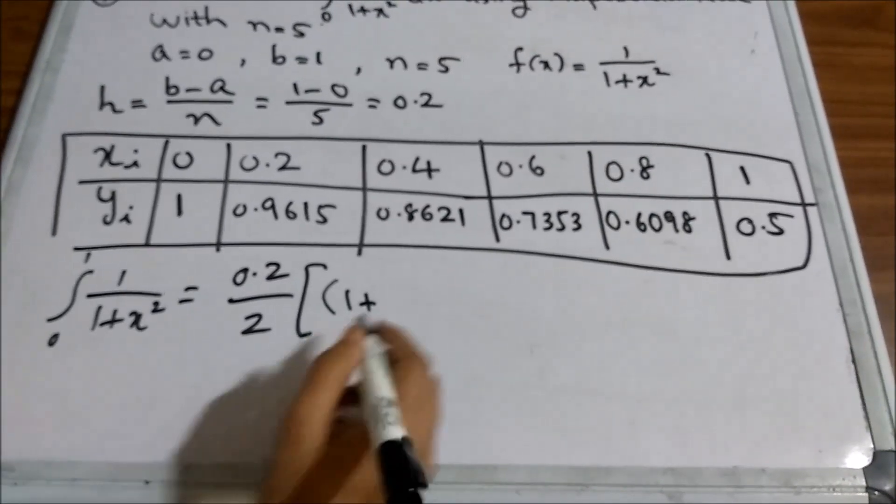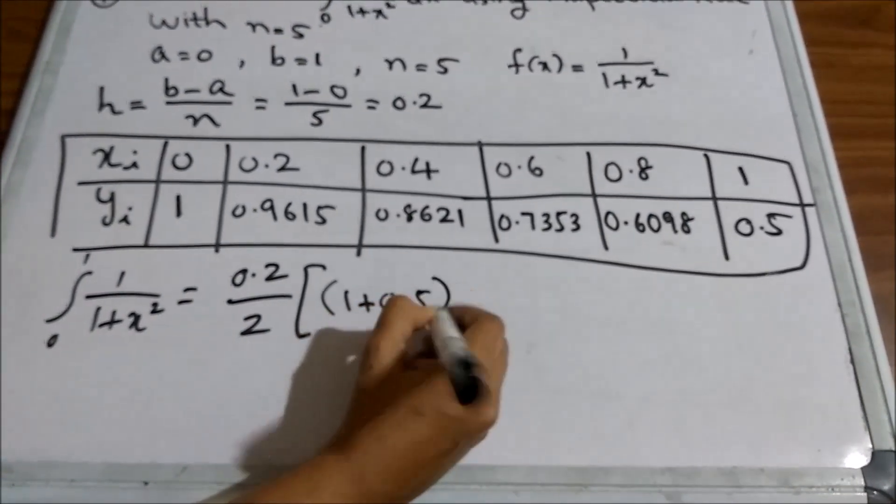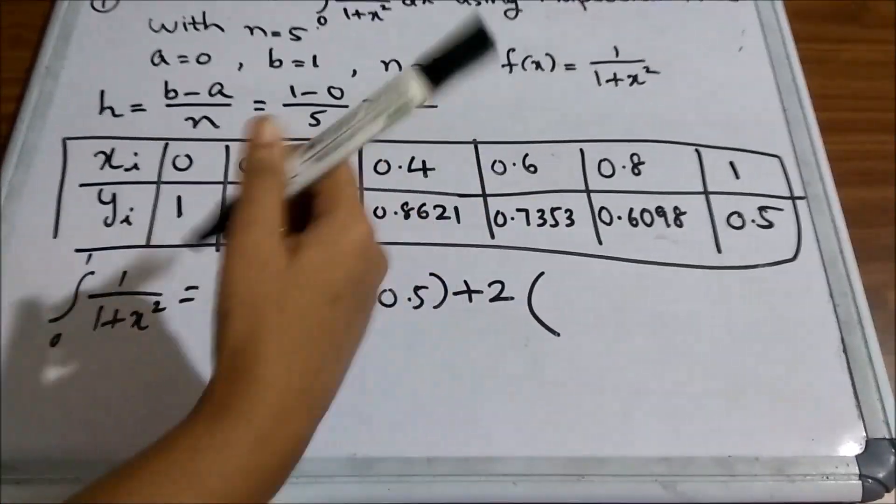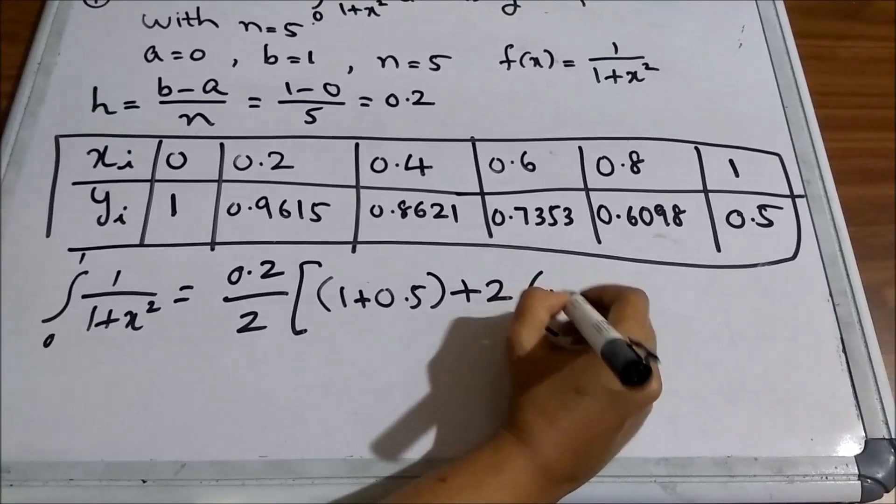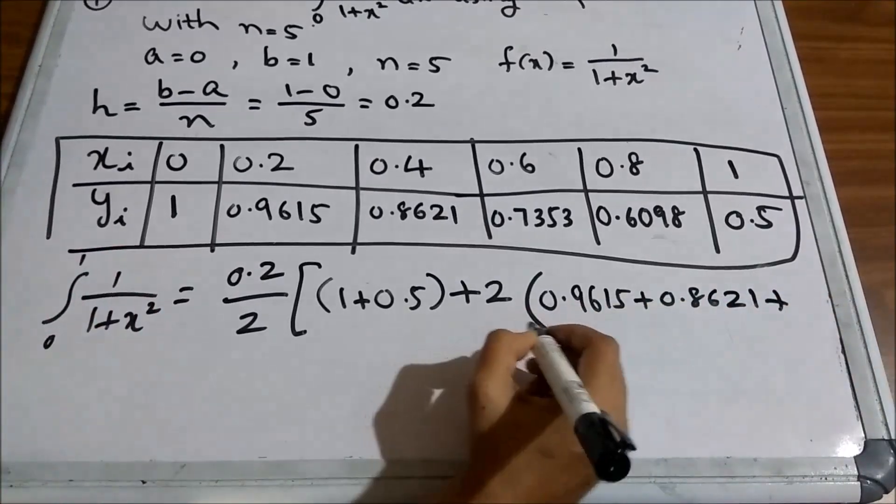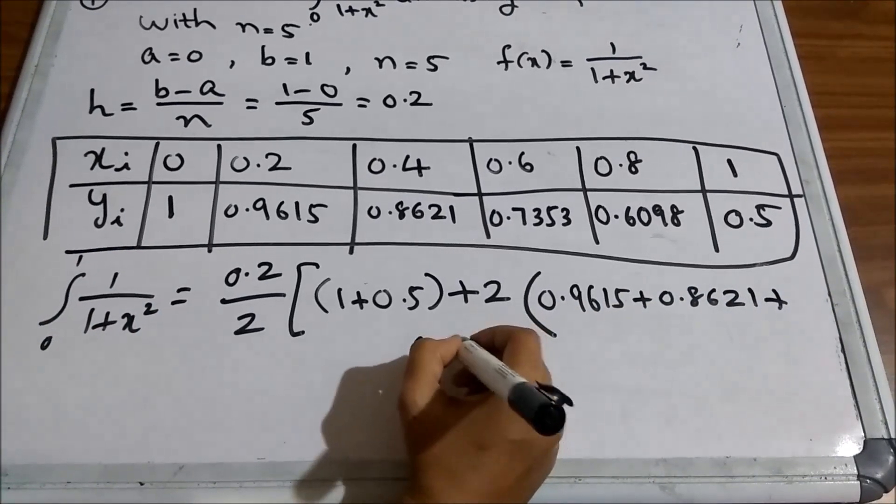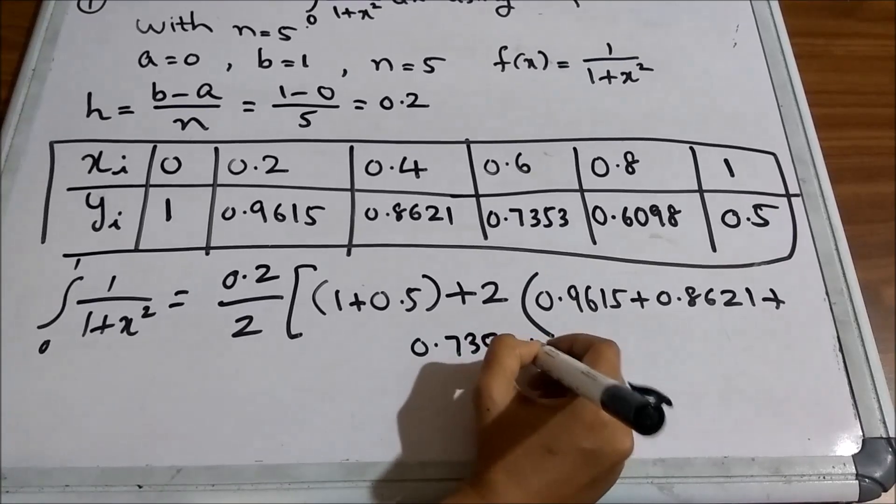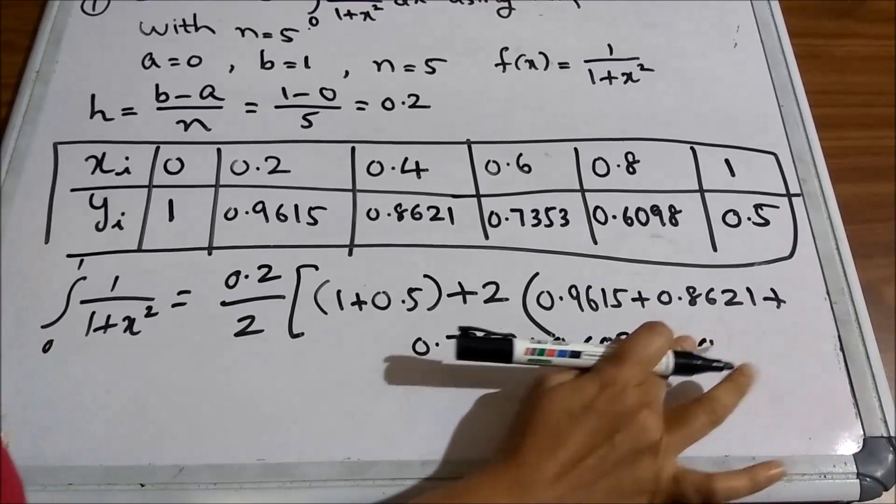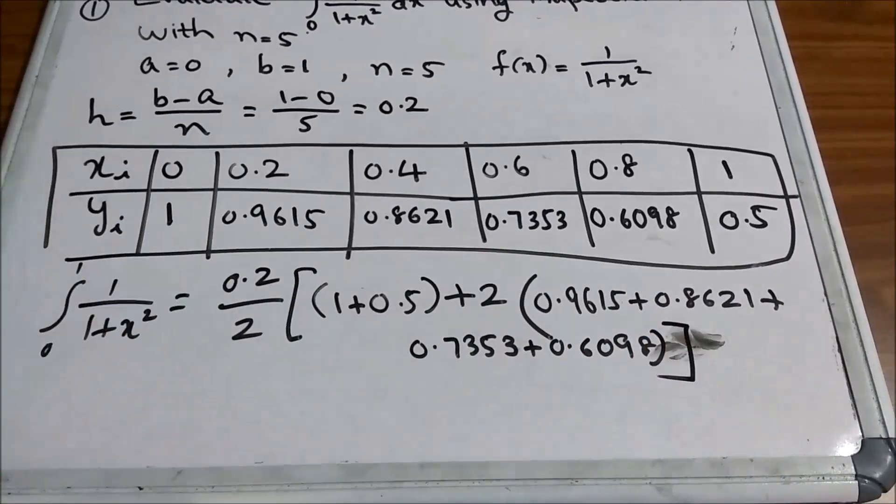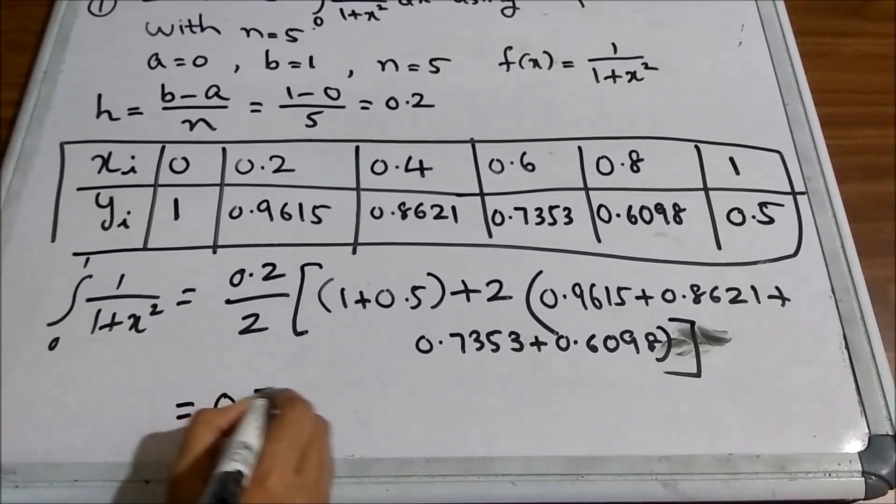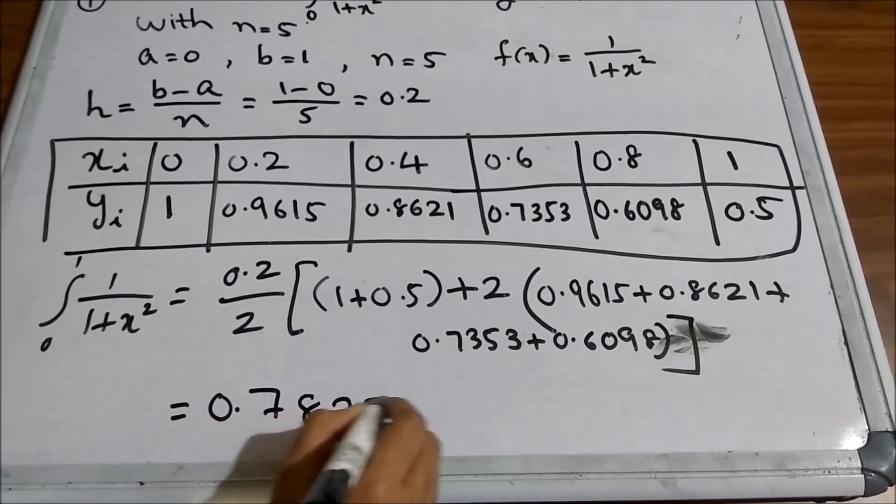yn is 0.5 plus 2 into y1 plus y2 plus y3 plus y4 all the remaining values. So, 0.9615 plus 0.8621 plus 0.7353 plus 0.6098 and you can see that this value is equal to 0.78374.